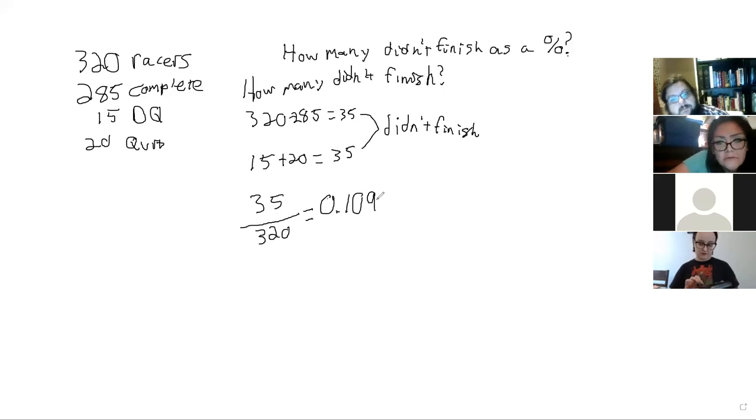Real quick, the formula for that is the percentage equals the part divided by the whole number or total, then times 100. You've got to move the decimal place twice, so it was 10.9 percent.